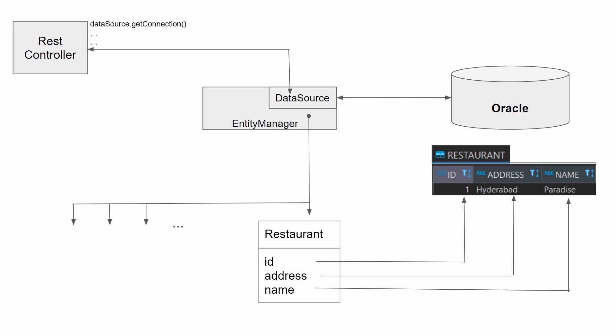Another way is the EntityManager bean. This EntityManager bean along with Hibernate asks the developer to create entities or models which can reflect the structure of the tables in the database. For example, the restaurant entity maps to the restaurant table in the Oracle database: id maps to id, address to address, and name to name. The EntityManager helps the developer perform CRUD operations on the tables.